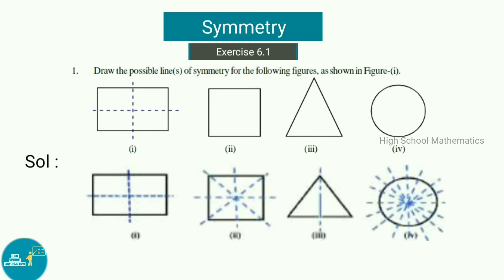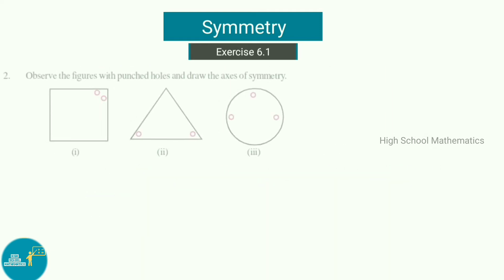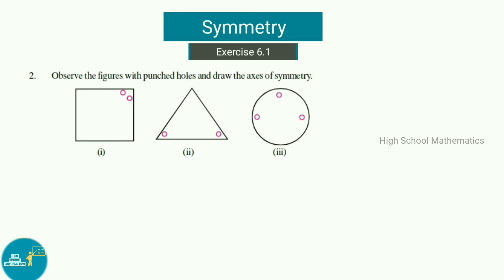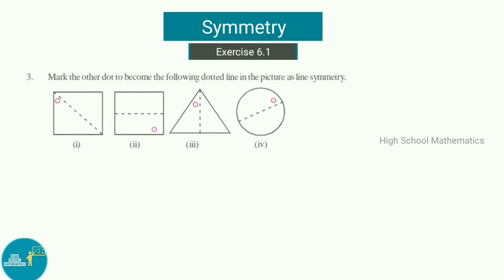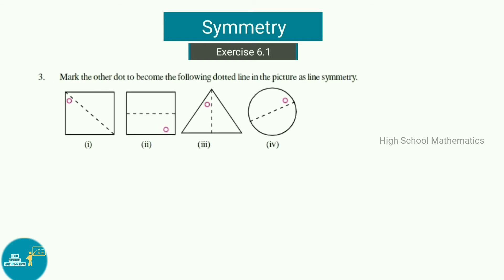Question 2: Observe the figures with punctured holes and draw the axis of symmetry. The first figure is a square, the second is a triangle, and the third is a circle. They have been given punctured holes, and we have drawn the axis of symmetry accordingly.